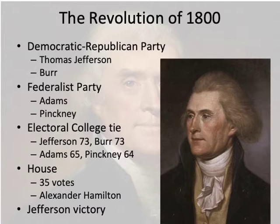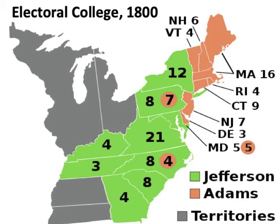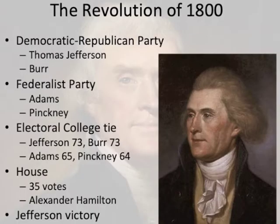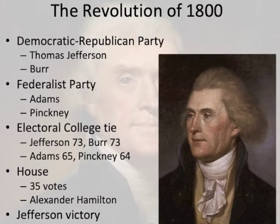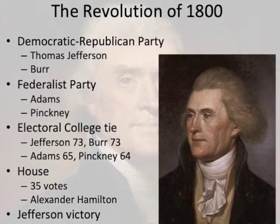Jefferson and Burr handily defeated Adams and Pinckney. Jefferson and Burr together got 146 electoral votes, while Adams and Pinckney got 129. The problem arose because of the electoral vote tie between Jefferson and Burr, each who had gotten 73 electoral votes. This tie, following constitutional mandate, threw the election into the House of Representatives, where the vote tied on the two candidates on 35 ballots, with the Federalist representatives mostly supporting Burr and the Democratic Republicans supporting Jefferson. At this point, Alexander Hamilton intervened. Jefferson's battles with Hamilton had been legendary, especially the battle over the establishment of the Bank of the United States.